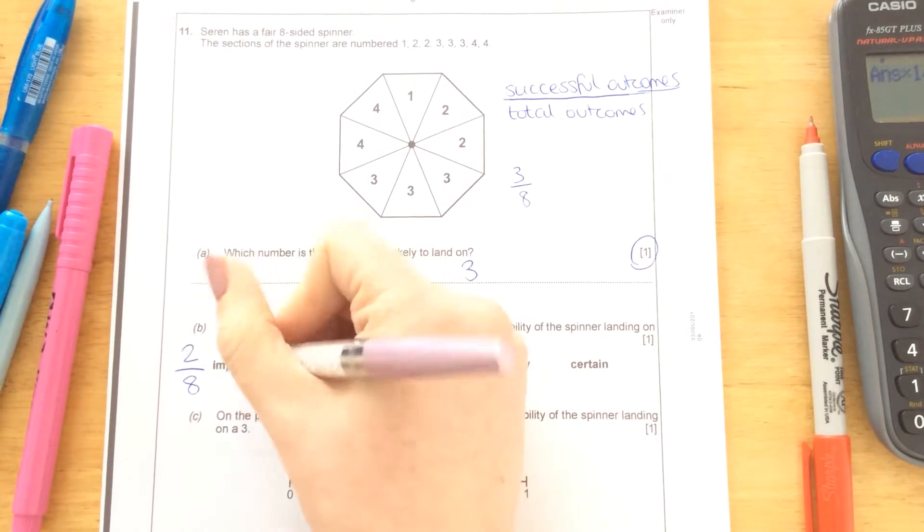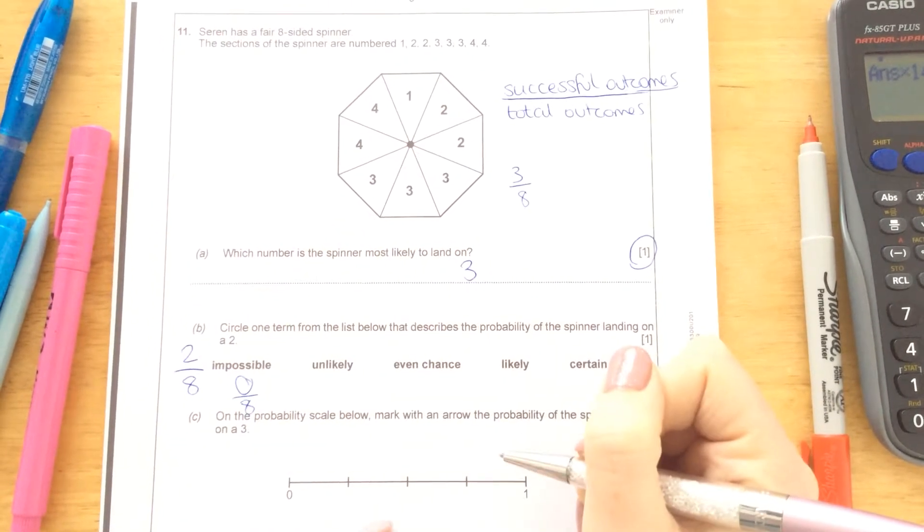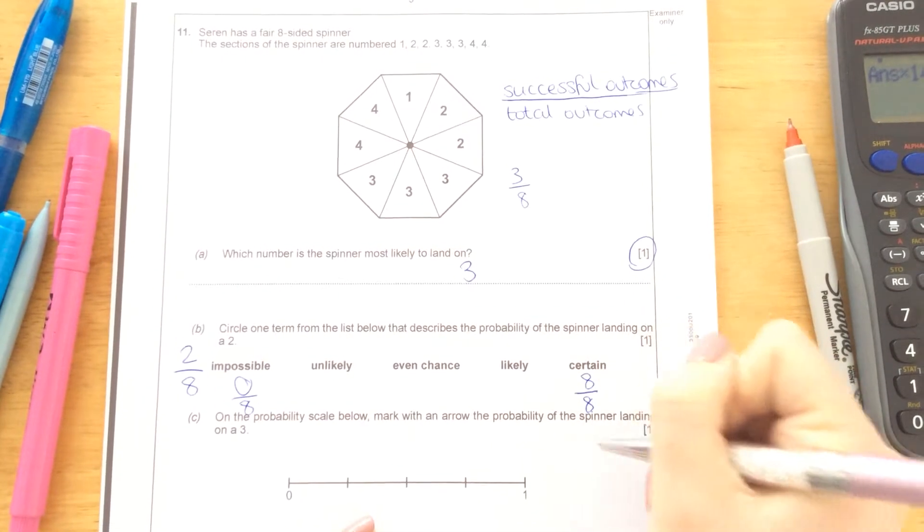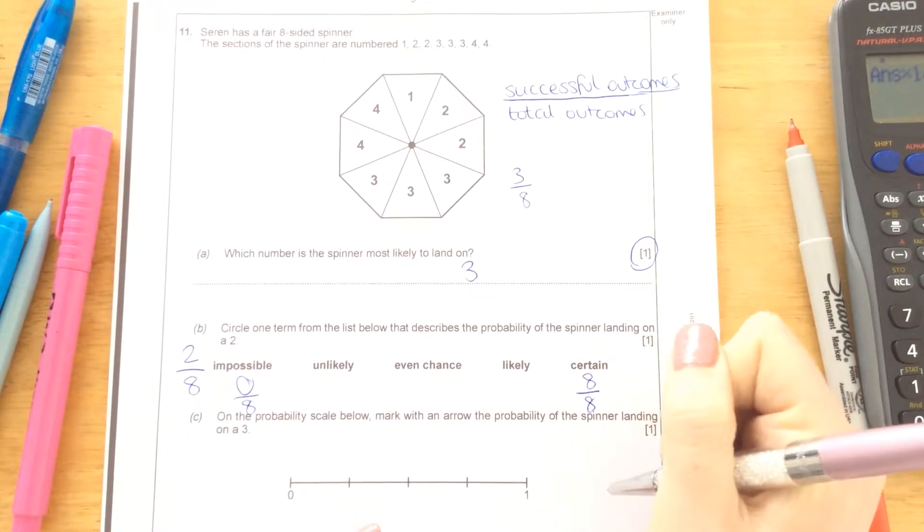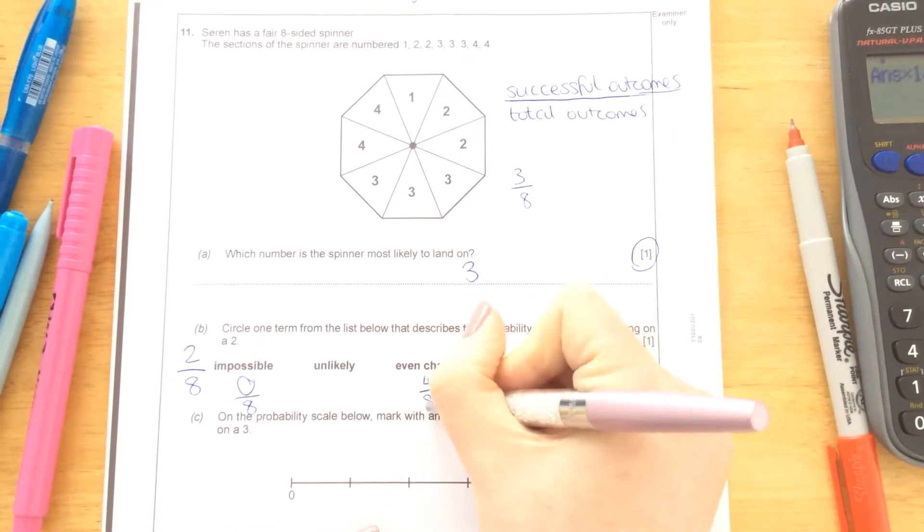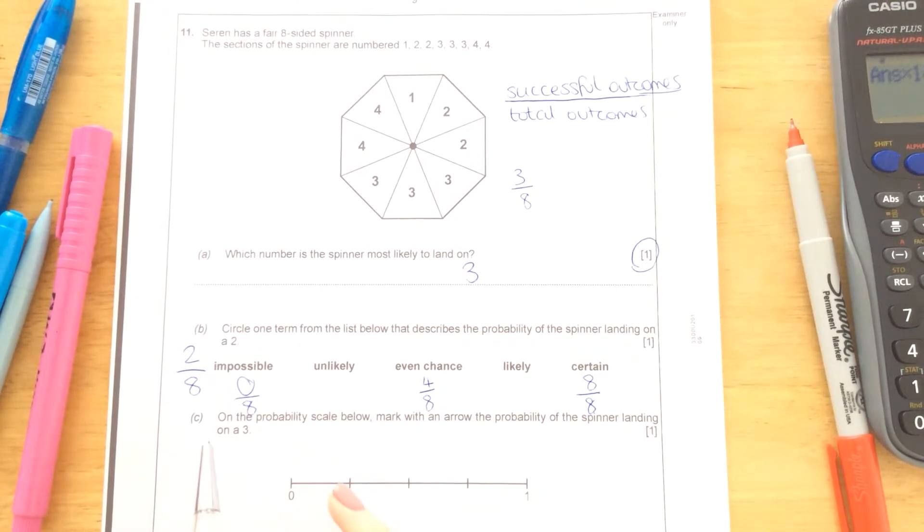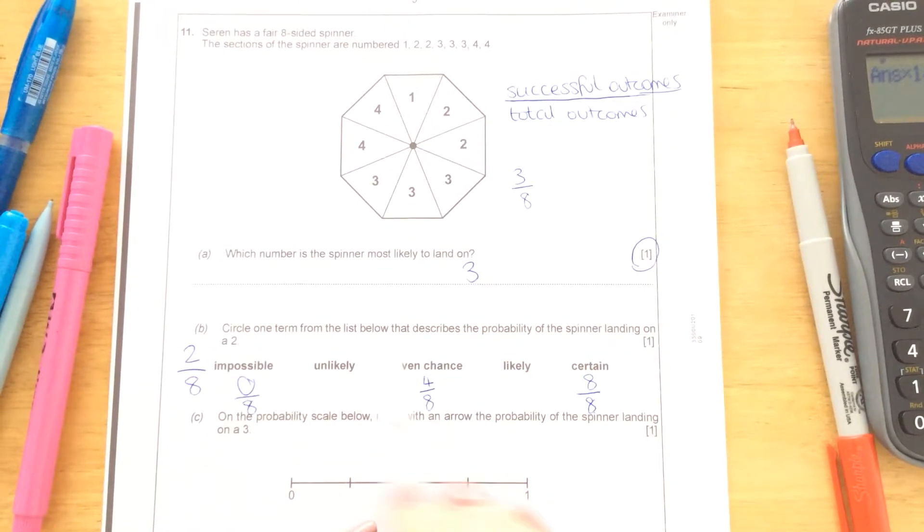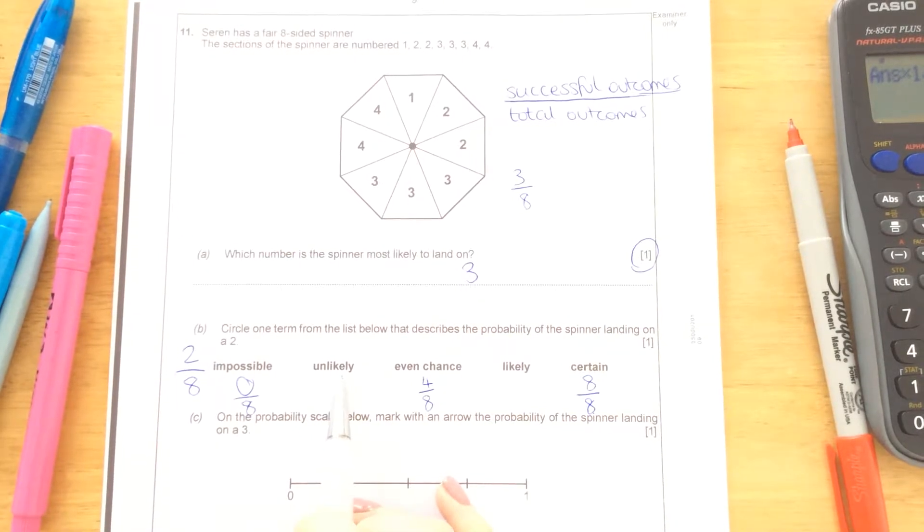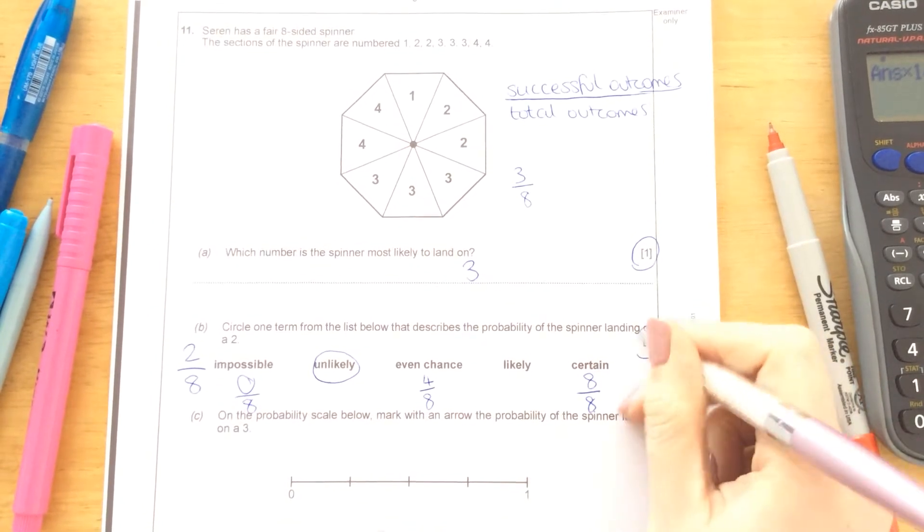If it was impossible, it would be 0 out of 8, it would never happen. If it was certain, it would be 8 out of 8, every number would be a 2. If it was even, that would be half and half, so it would be 4 out of 8, but there are 2 twos out of the total 8. So it's definitely not even, it's not impossible. The best word to describe the chance of picking a 2 would be unlikely for 1 mark.